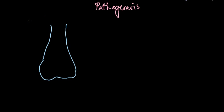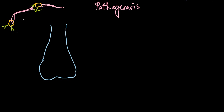The nerve construction is something like this: we have a cell body, and from the cell body we have dendrons coming out, and then axons going out. The axon will interact with the dendrite of the second neuron. Throughout the nerve interactions, at the end there is a region we call the neuromuscular junction.